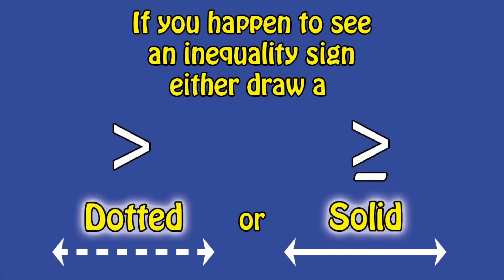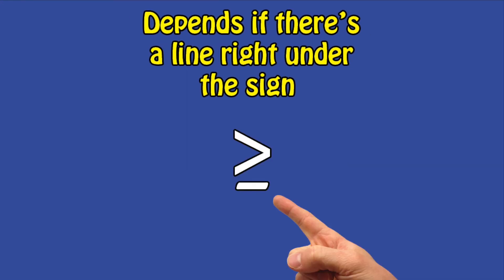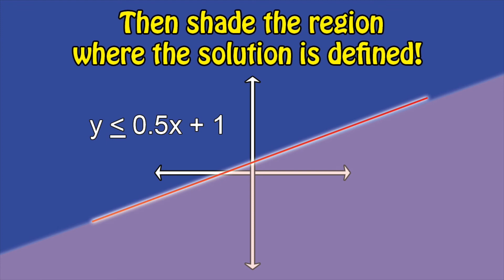If you happen to see an inequality sign, either draw a dotted or solid line. Depends if there's a line right under the sign. Then shade the region where the solution is defined.